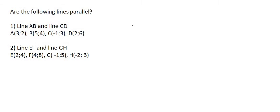Are these lines parallel? So we're looking at the lines AB and the lines CD. What we do is work out the gradient of each line, and then we see if their gradients are the same. If they are the same, then they are parallel, because remember, we've just said that parallel lines have the same gradient. And remember, we do have a gradient formula.